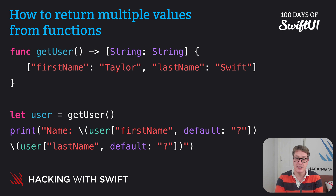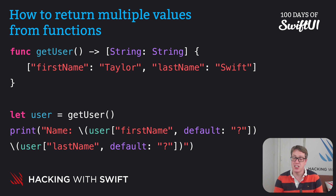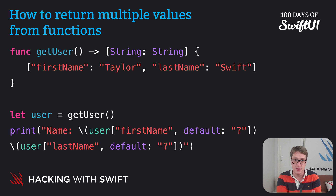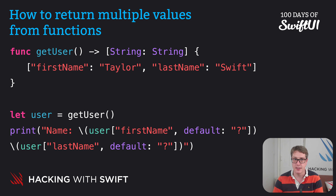Both of these solutions are honestly pretty bad. But Swift has a better solution in the form of tuples. Like arrays, dictionaries, and sets, tuples let us put multiple values into a single variable or constant. But unlike those other options, tuples have a fixed size and can have a variety of data types really easily.